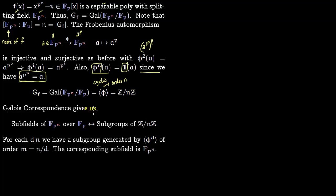Now the Galois correspondence gives us: subfields of F_(p^n) over F_p are in one-to-one correspondence with subgroups of Z/nZ.